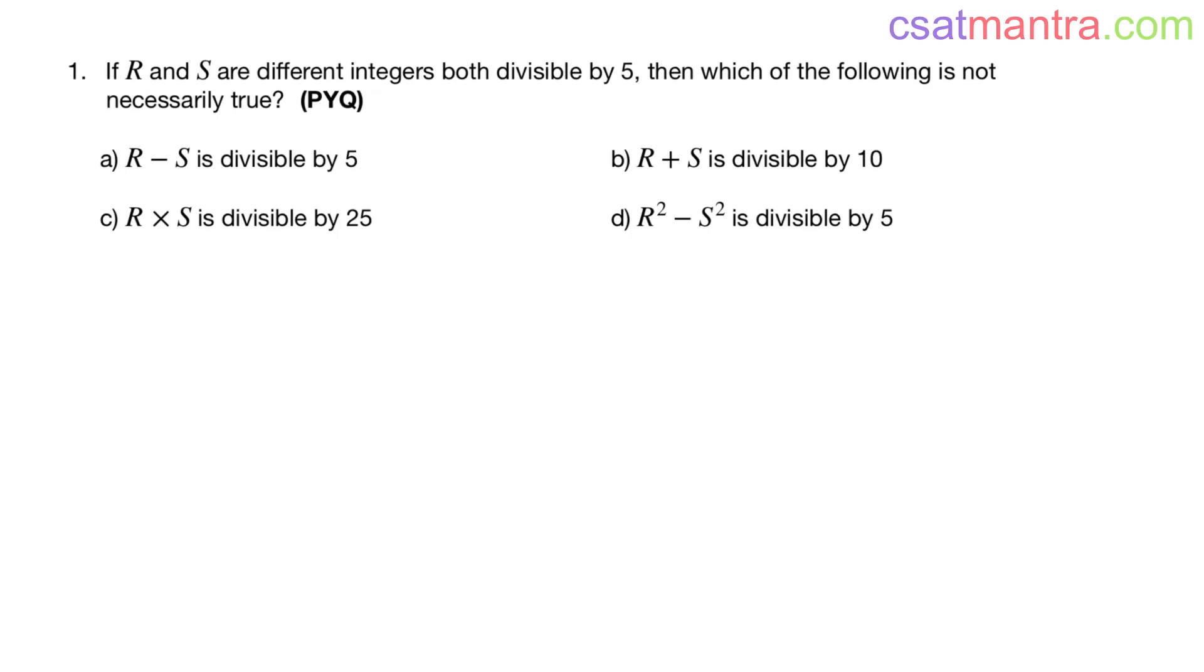If R and S are different integers both divisible by 5, then which of the following is not necessarily true? This is a previous year question from number system, my friends.